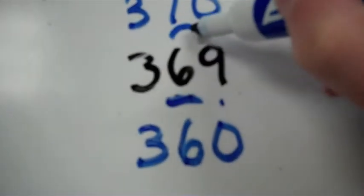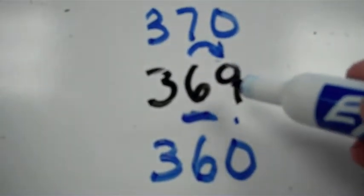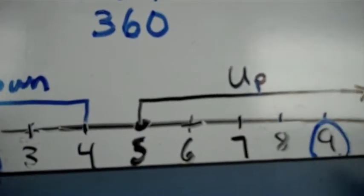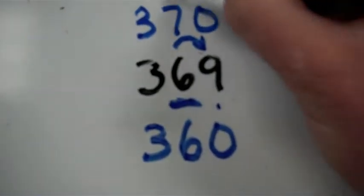Well, we're going to look at the next digit, and that's a 9. And the 9 right away tells us that we're rounding up, and the answer is 370.